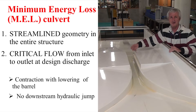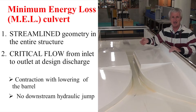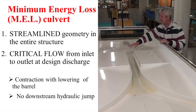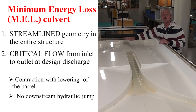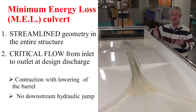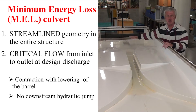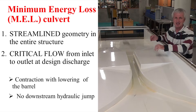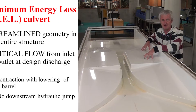The design contracts the flow with a lowering of the invert in the barrel to increase locally the specific energy and hence to maximize the discharge per unit energy. Then at the exit, the flow is brought back from critical to subcritical without energy losses. Because of the disappearance of any hydraulic jump at the outlet, the energy loss and afflux are much smaller in the minimum energy loss culvert.